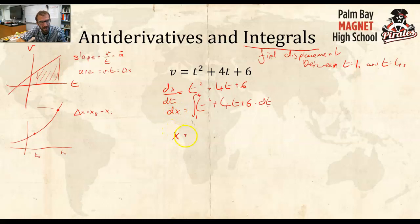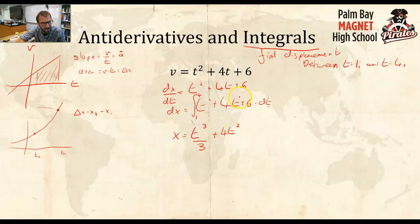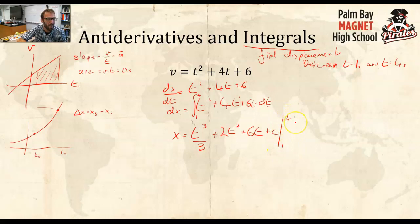We take the integral. x becomes: t squared goes to t cubed over 3, plus 4t goes to 4t squared over 2, which simplifies to 2t squared, plus 6 goes to 6t. Then there's some constant c, and we're evaluating this from one to four. We draw a line on the side and write one to four. To find the displacement, all I have to do is plug in t equals four and t equals one.